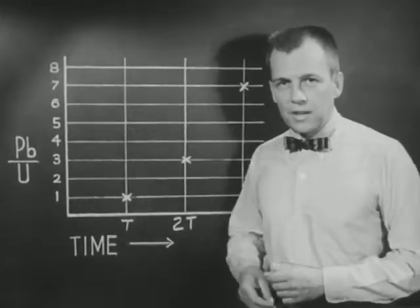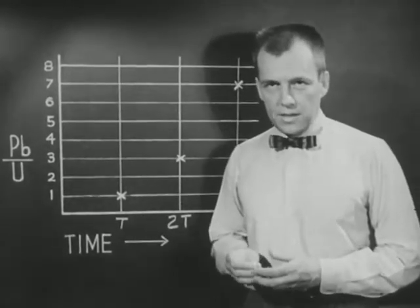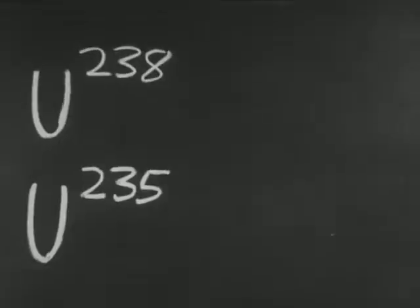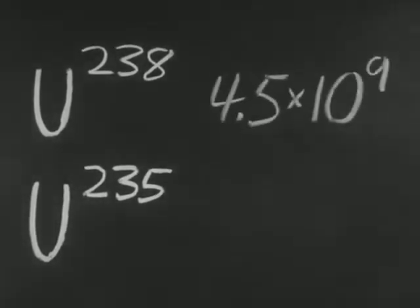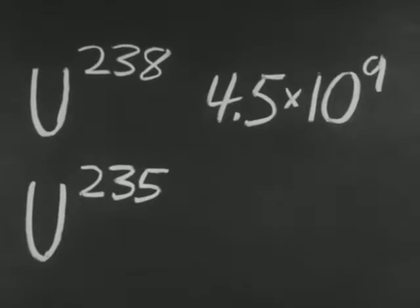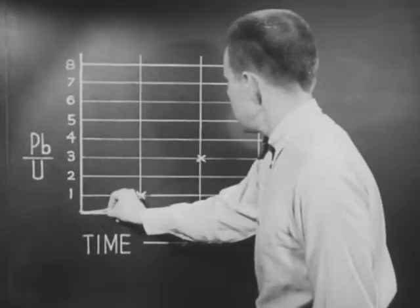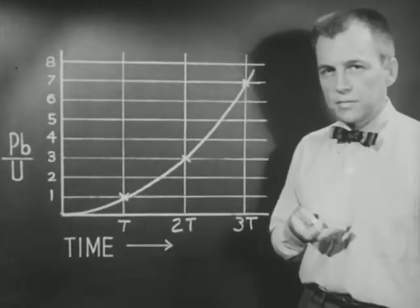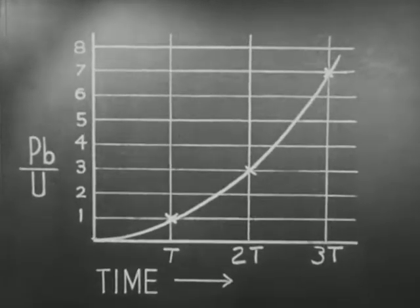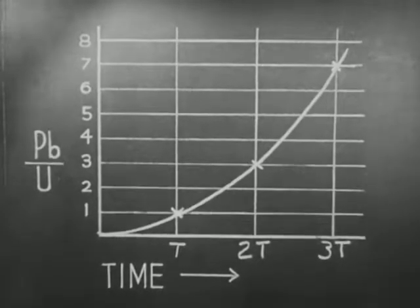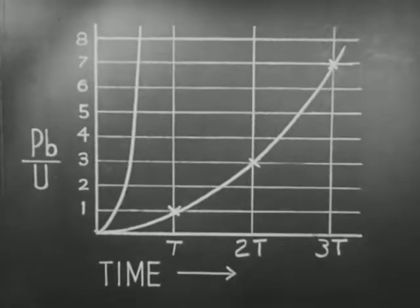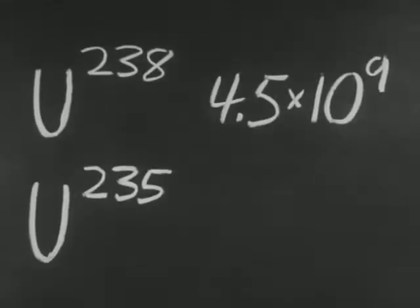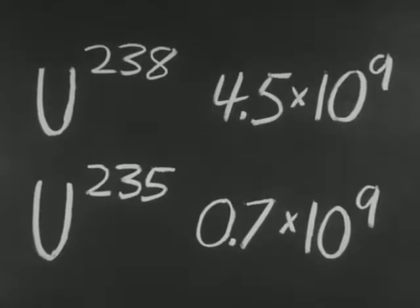As you may have guessed by now, the time interval T is called the half-life of the radioactive material. The half-life is simply the time interval required for half of any amount of radioactive material to decay. In the case of uranium-238, the half-life is about 4.5 times ten to the ninth years. If a smooth curve is drawn through the points we have plotted, we can determine the lead-to-uranium ratio at any time along the curve. We can also plot the curve for the lead-207 uranium-235 clock. This curve is different because the half-life of uranium-235 is shorter than that of uranium-238, namely seven-tenths times ten to the ninth years.